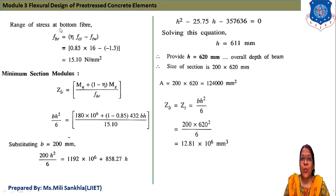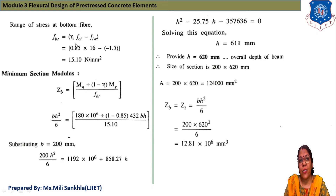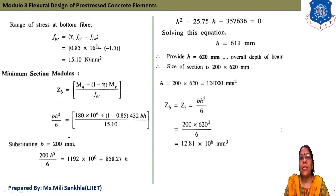The range of stresses at the bottom fiber: f_br = η·f_ct − f_tw. With η = 0.85, f_ct = 1.6 N/mm², f_tw = −1.5 N/mm², we get f_br = 0.85 × 1.6 − (−1.5) = 15.10 N/mm².